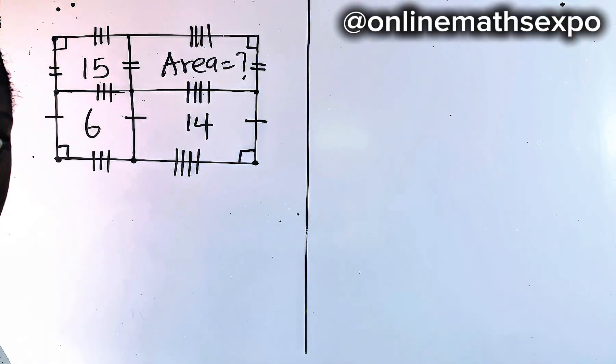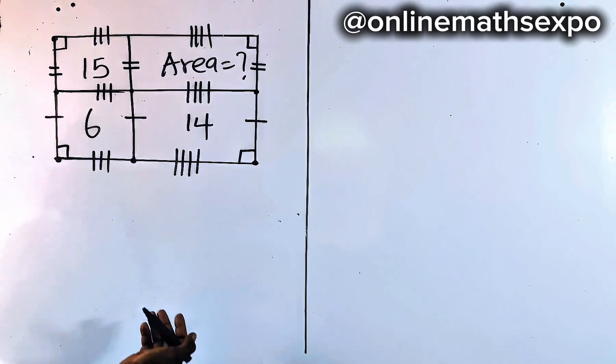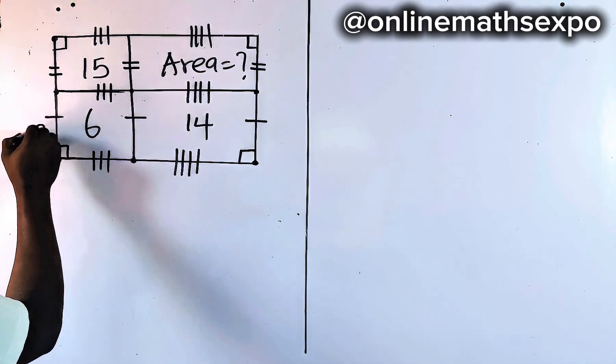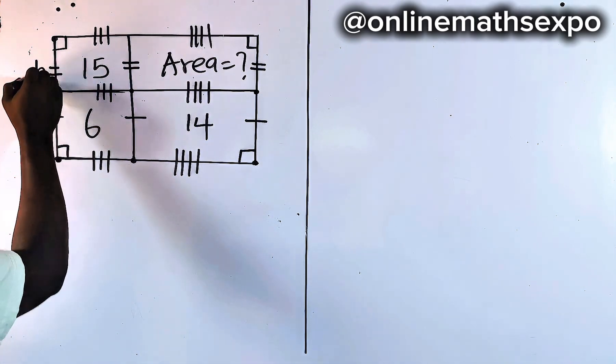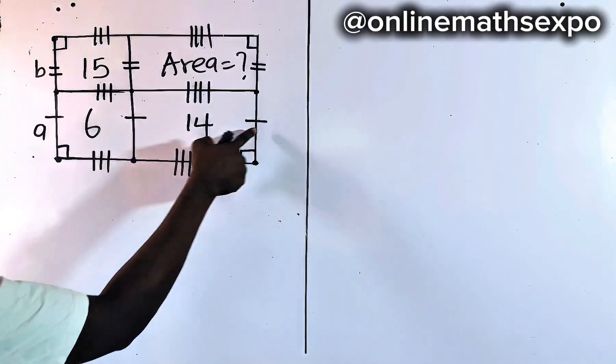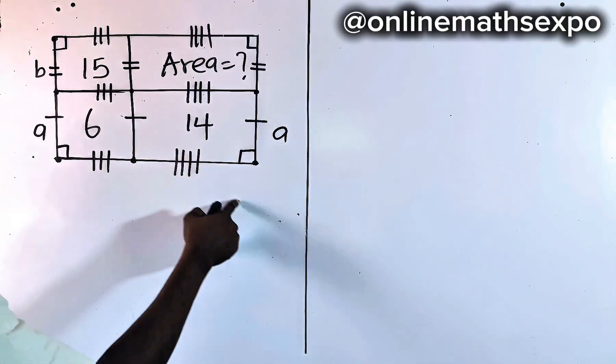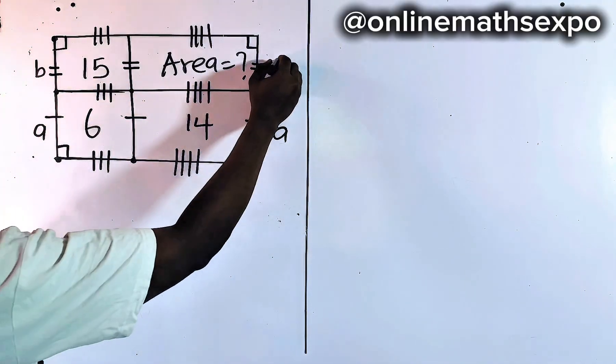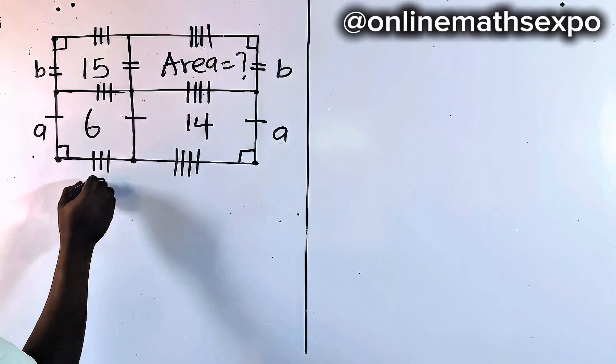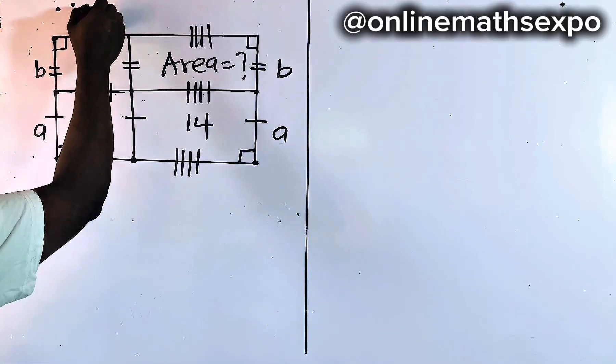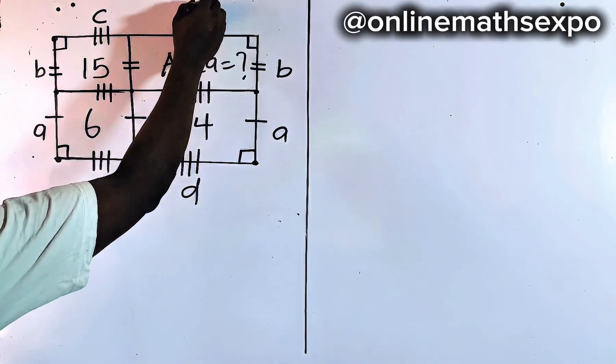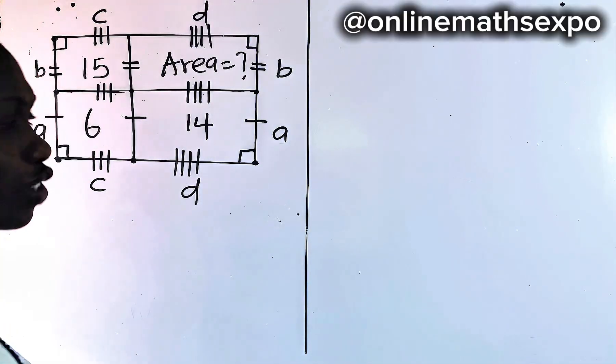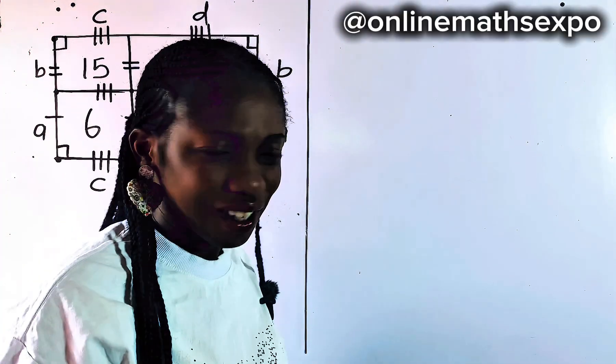Now, with this, we can give the letters to help us to solve. So we can give this A and this is B. And if here is A, this side also becomes A. And if here is B, here becomes B. Now, we can give this C and here becomes C. And this is D and this becomes D. Now, with this, does it help us to answer this question?